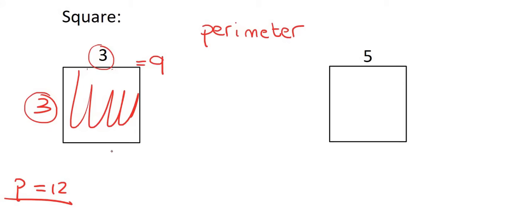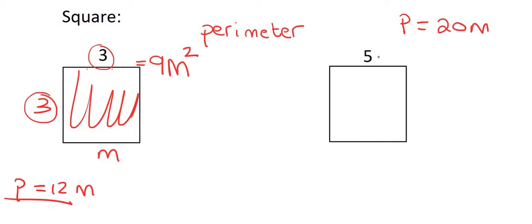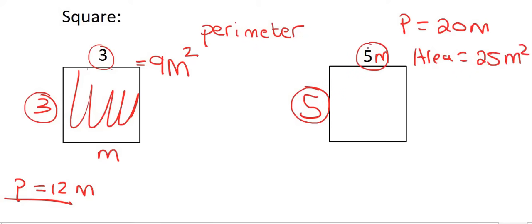Let's say the units are meters. Then the perimeter would be 12 meters, and for area, because you're multiplying two lengths together, you write m squared — so nine meters squared. Let's quickly try the example on the right. To work out the perimeter, you would say five plus five plus five plus five, or five times four, which gives us 20 meters. For the area, that's just five times five, so the area is 25 meters squared. It's really good to understand what you are doing rather than memorizing formulas.